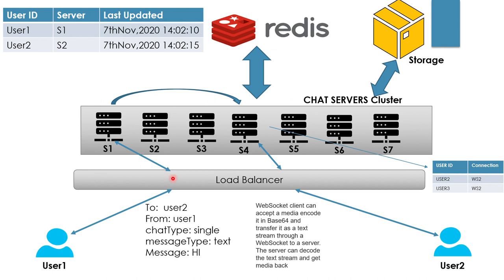So far we have covered: one-to-one messaging, scaling the system, sent/delivered/seen status notifications, last-online feature using heartbeats and Redis, and media message transfer using storage and base64 encoding. The next topic is making the chat persistent.